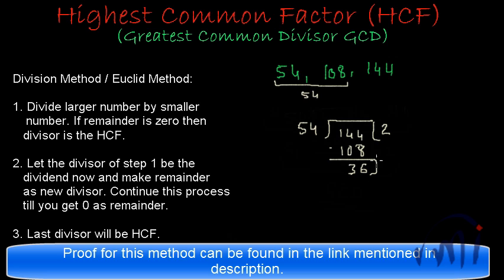And now this 36 will become the divisor and 54 will be the new dividend. And 36 will divide it only one times because 36 multiplied by 2 is 72. So it will divide it only once. 14 minus 6 will give us 8 and 4 minus 3 will give us 1, that is 18.